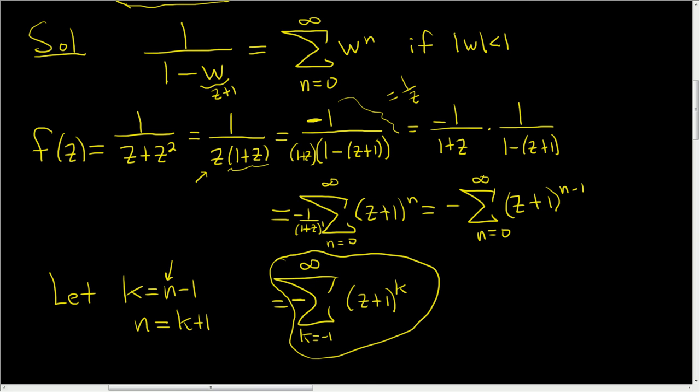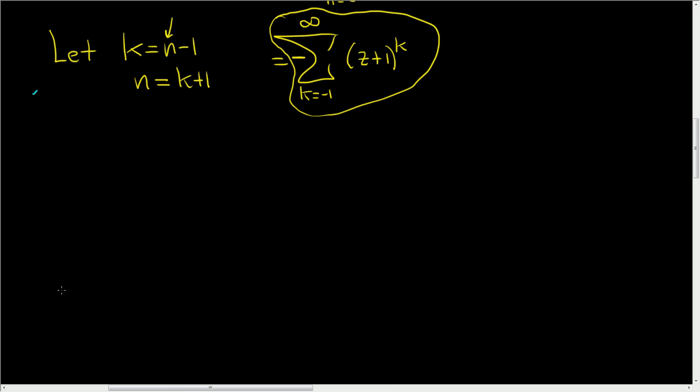Now, if you don't like the approach we took, there is another approach you can take. So let me go through that. So remember, we have z plus 1 less than 1 and greater than 0. And we start with f of z equals 1 over z plus z squared.